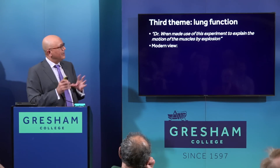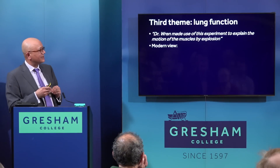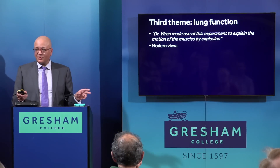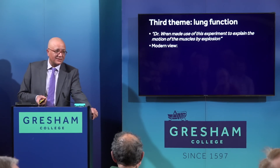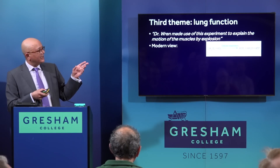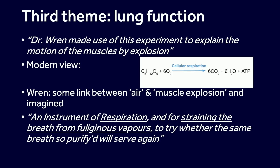Moving to the third theme: lung function. A fascinating comment from the time: 'Dr. Wren made use of this experiment to explain the motion of the muscles by explosion.' Wren was interested in how muscles worked, and he felt there was literally an explosion in the muscles causing contraction. He was actually right — in modern biochemical terms, this is the equation of glucose combining with oxygen to yield carbon dioxide, water, and ATP, the molecule of energy. It's a combustion process — what we call cellular respiration. What Wren was referring to as an 'explosion' was this volatile combination of energy with what we now call oxygen — the modern view of what he was describing.